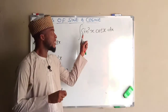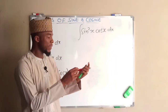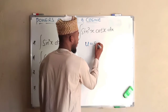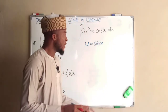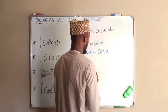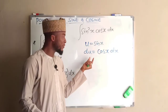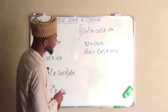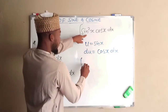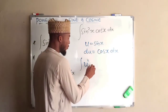We know that if you differentiate sine X you obtain cos X, so we can use substitution here. Let U equal to sine X. If you differentiate U with respect to X, DU equals cos X DX. We have cos X DX in our integral, which we substitute as DU. So the integral becomes U squared DU.